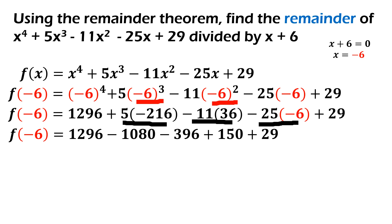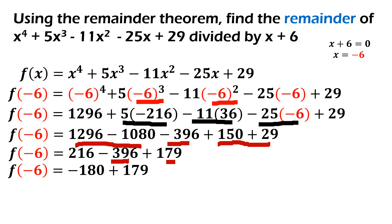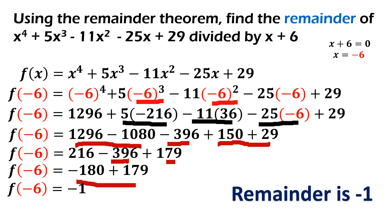Inuna natin is 1,296 minus 1,080. Sagot dun is 216. And then, kinopy lang natin yung negative 396. Sinawag doon natin to — yung same sign sila kasi. So, 179 yung sagot. 216 minus 396 is equal to negative 180 plus 179. Ang remainder natin will be equal to negative 1.